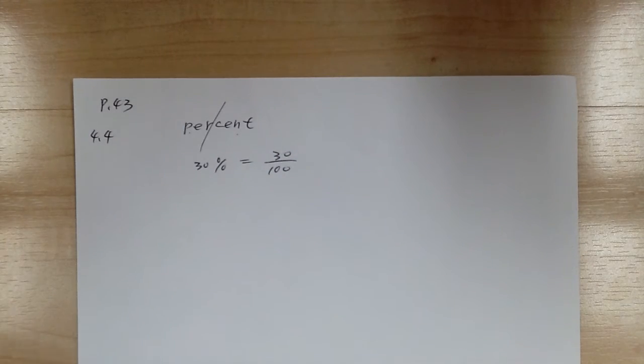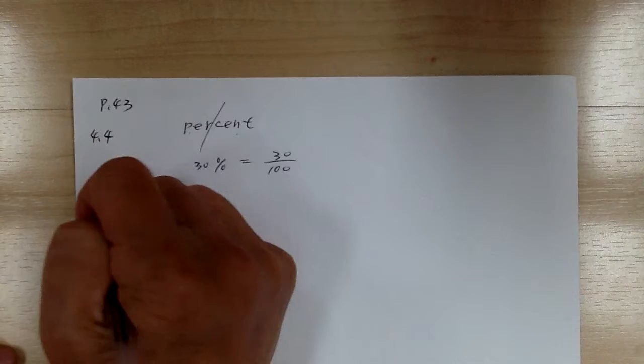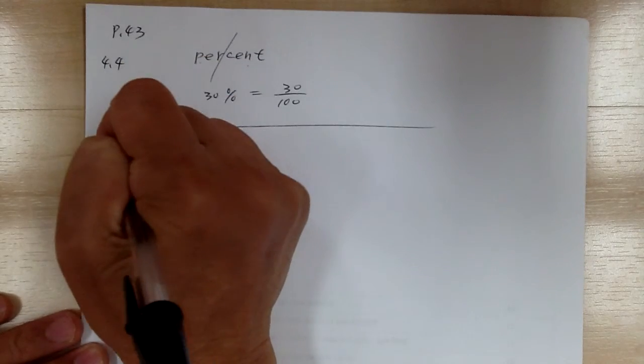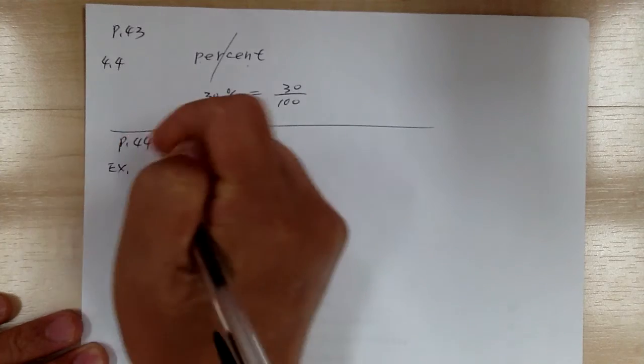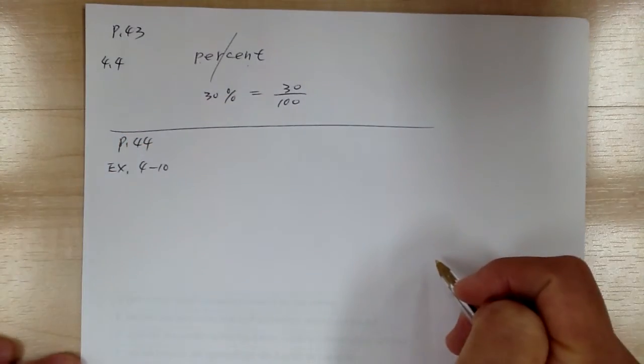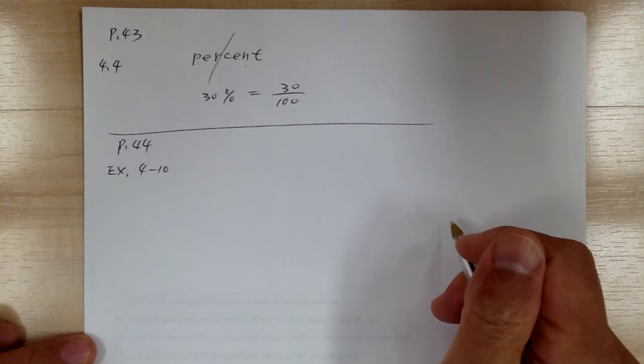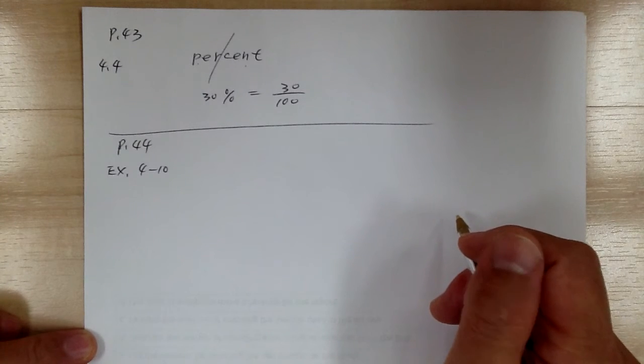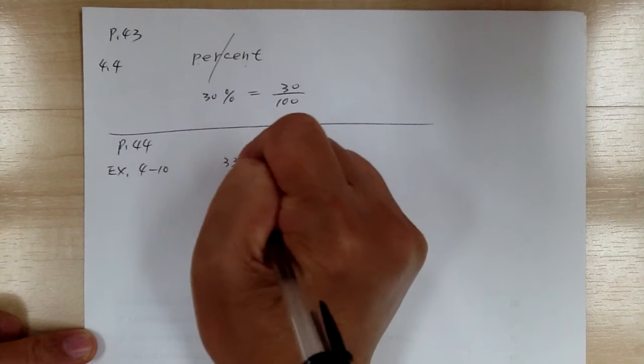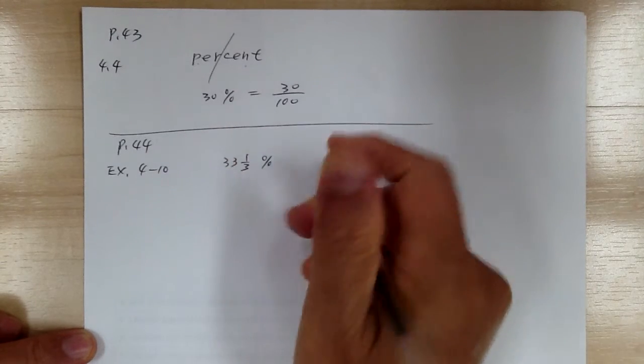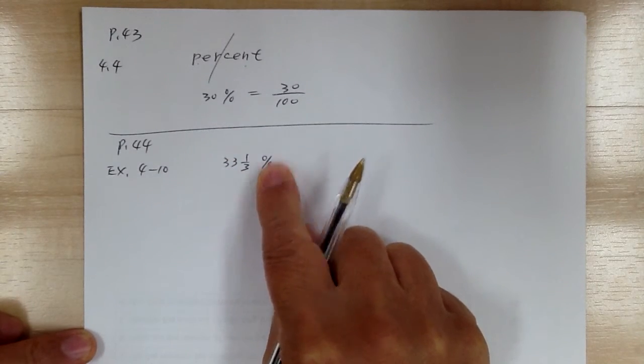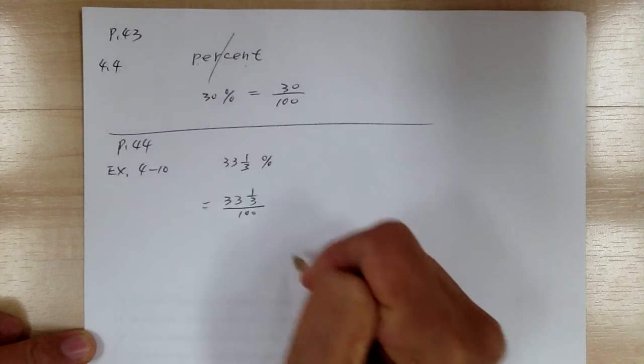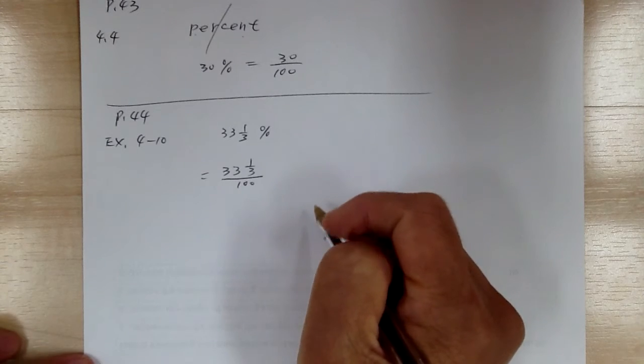Now let's look over some examples. On page 44, example 4-10, it says write 33 and one-third percent as a decimal and as a fraction. So we've got 33 and one-third percent. Again, whenever you see this means over 100. So this is equal to 33 and one-third over 100.